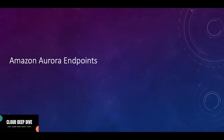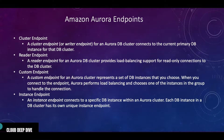Hello everyone, welcome back to another video of Cloud Deep Dive. In today's video we will talk about Amazon Aurora endpoints, which are used to connect your DB instances. There are four different types of endpoints: cluster endpoint, reader endpoint, custom endpoint, and instance endpoint.